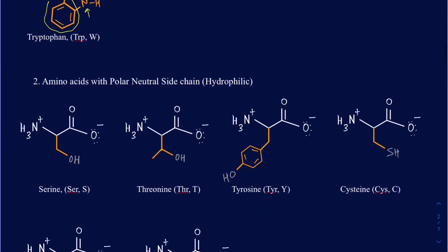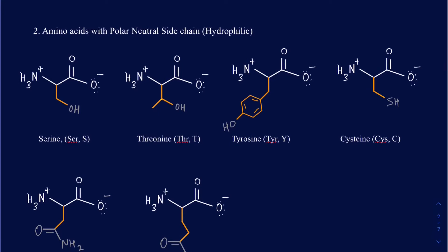Let's talk about amino acids that have neutral polar sidechains. They're going to be hydrophilic and capable of making either hydrogen bonds or dipole-dipole interactions. Serine is the first one, and obviously what makes serine polar is the presence of this OH group. The difference between serine and threonine is having an extra methyl group on threonine. Then we have tyrosine, which also has an OH group. So all three of those are capable of making hydrogen bonds because of the presence of OH.